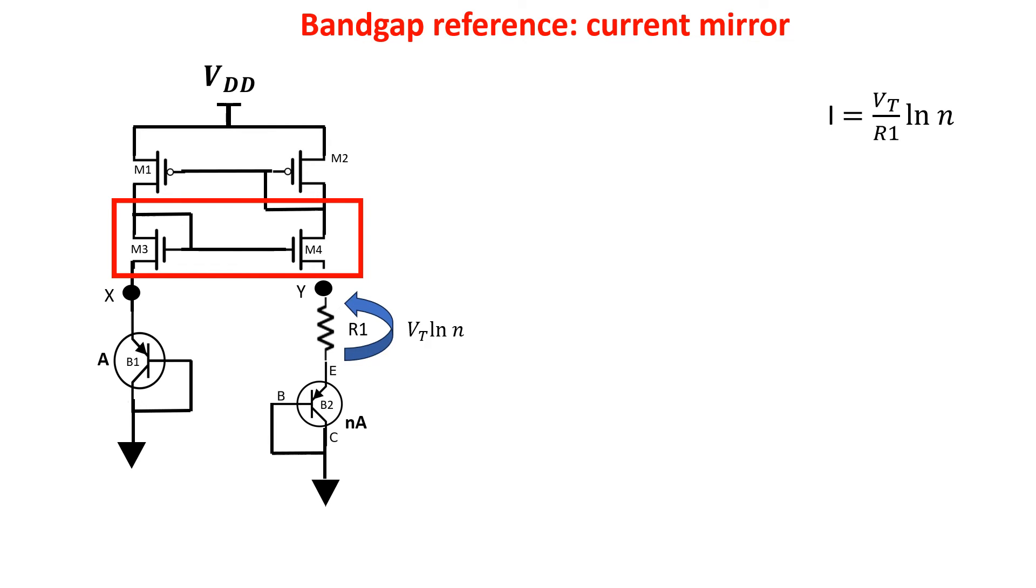We can use the current mirror to copy the PTAT current into a new branch where we have a resistor and another PN junction. So now Vref is equal to VBE3 as CTAT voltage plus R2 over R1 times VT log N as PTAT voltage. Here alpha is equal to R2 over R1, and to have alpha equal 6 we can take R2 12 kOhms and R1 2 kOhms.